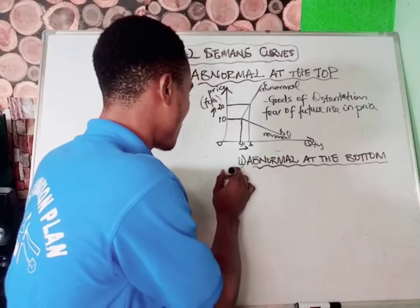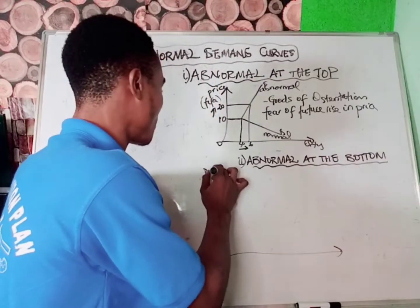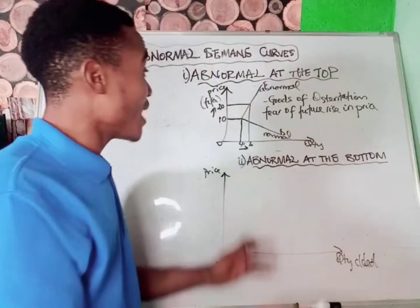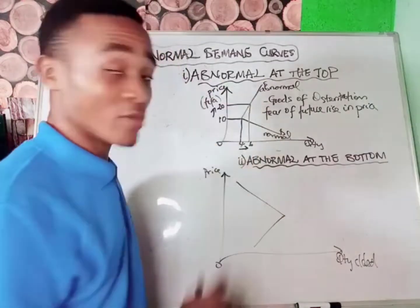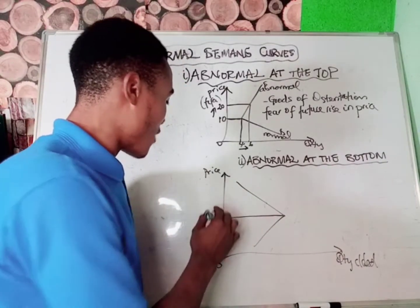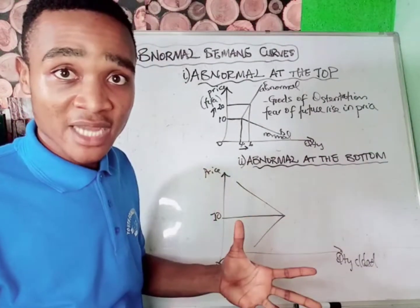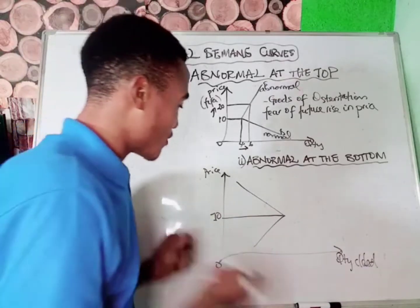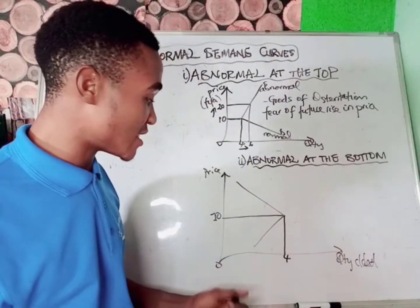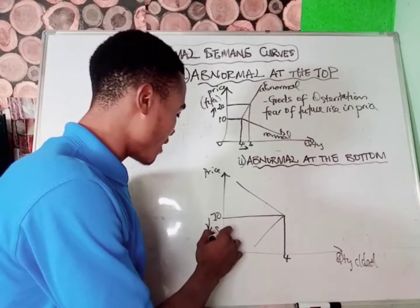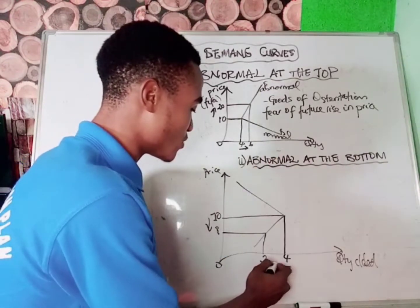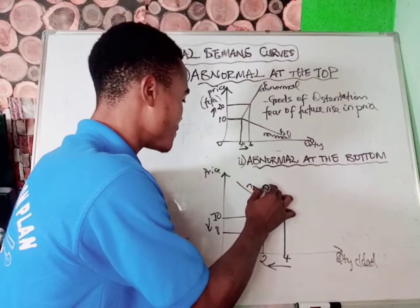Let's look at abnormal at the bottom. Remember to always have price on the vertical axis, origin, and quantity demanded. With abnormal at the bottom, demand becomes normal at the top but abnormal at the bottom. At a market price of 10 francs CFA, people buy four quantities. When price falls to eight francs, you would expect people to buy more according to the normal law, but people instead buy less — say two quantities, a movement to the left. That shows abnormality.